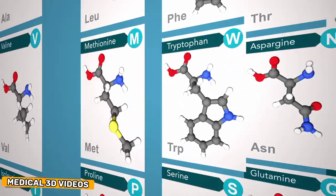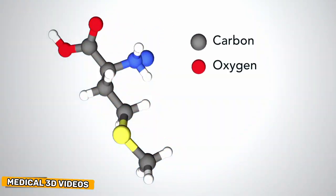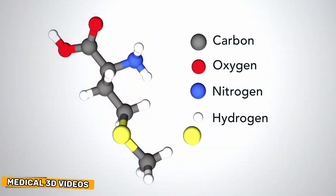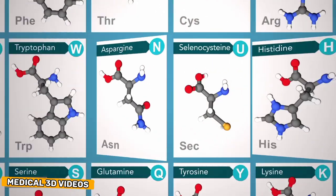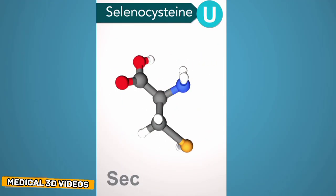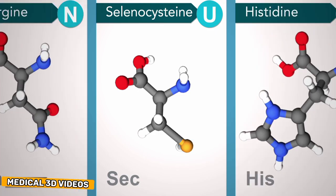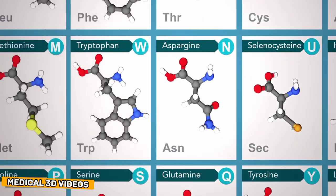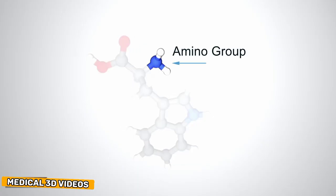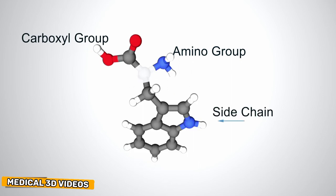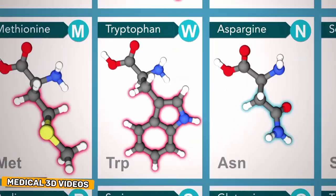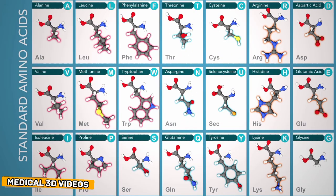Amino acids are made of carbon, oxygen, nitrogen, and hydrogen atoms, and some contain sulfur atoms. Selenocysteine is the only standard amino acid that contains a selenium atom. These atoms form an amino group, a carboxyl group, and a side chain, all attached to a central carbon atom. The side chain determines an amino acid's properties and is the only part that varies from amino acid to amino acid.